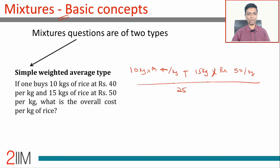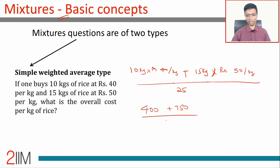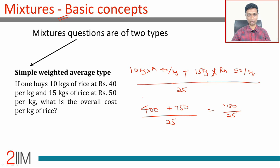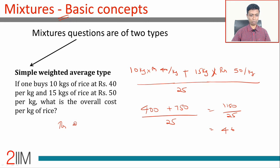You're buying 10 and then 15 — 25 totally. So it's (10×40 + 15×50) divided by 25, which is (400 + 750) / 25 = 1150 / 25. This equals 46, so the overall average cost per kilogram is rupees 46. It's a classic weighted averages question.